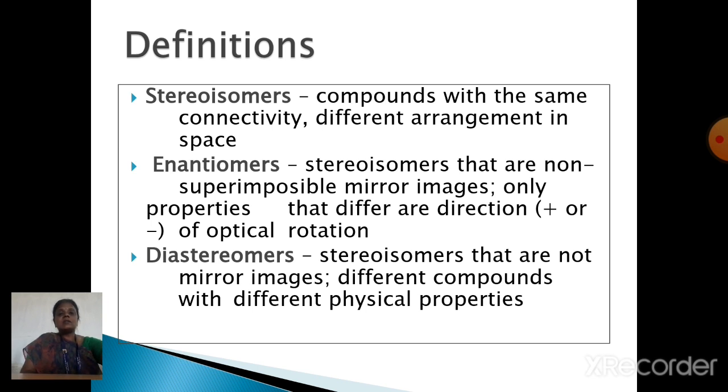Next one is Enantiomers. The Enantiomers are otherwise called Optically Active Isomers. These are stereoisomers that are non-superimposable mirror images and having the same physical and chemical characters, but those only differ in the optical characters.